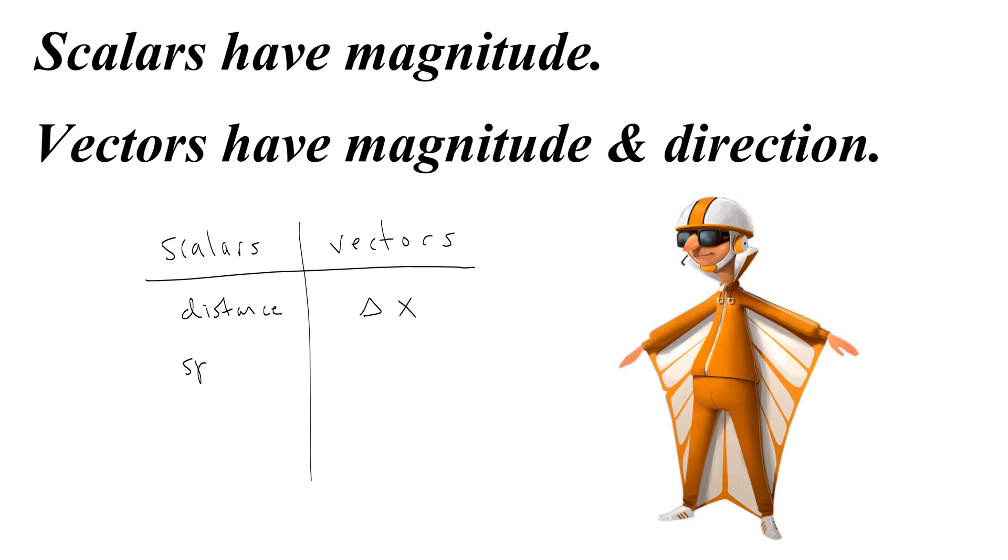Speed is a scalar because it's always just going to be a number. But average velocity is a vector because your velocity can be left or right. The magnitude and direction are both meaningful to velocity.